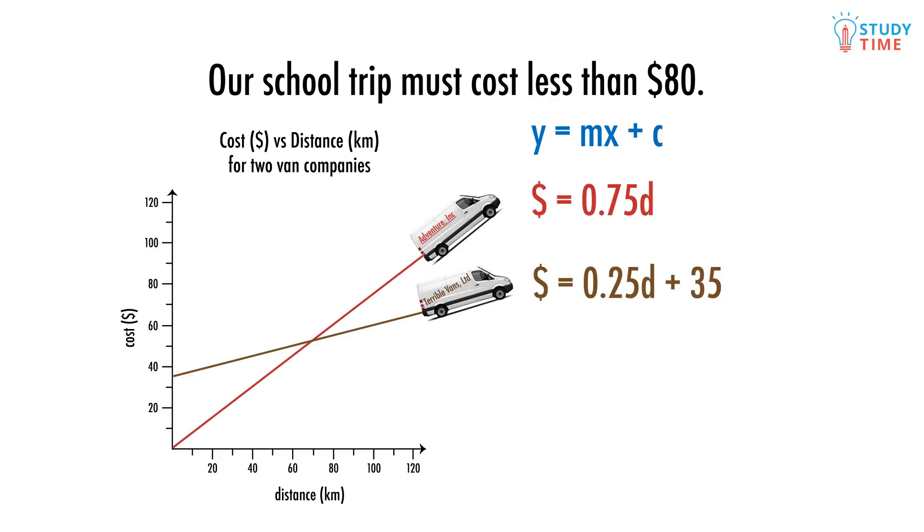In this real world example, the two companies charge different amounts. Our first company only charges per kilometre, but Terrible Vans Limited starts at $35. This is our y-intercept. It's the constant in the equation, cost equals 0.25d plus 35. This means that even though the Terrible Vans are cheaper per kilometre, it's more expensive than Adventure Inc. up until 70 kilometres, at which point the costs are the same.